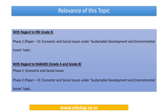The relevance of this topic with regard to RBI Grade B will be in Phase 2, Paper 2, Economic and Social Issues under Sustainable Development and Environmental Issues. With regard to NABARD, Grade A and Grade B will be in Phase 1, Economic and Social Issues, and Phase 2, Paper 2, Economic and Social Issues under Sustainable Development and Environmental Issues.